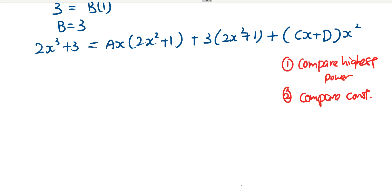So number one, we compare the highest power on the left hand side. My highest power is x cubed. So I write down comparing x cubed. My left hand side is 2x cubed. My right hand side, how would I form x cubed? 2x squared times ax, this will give me 2x cubed.